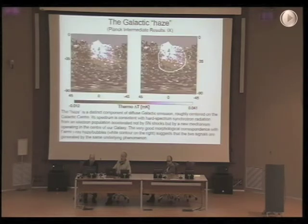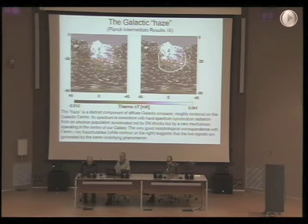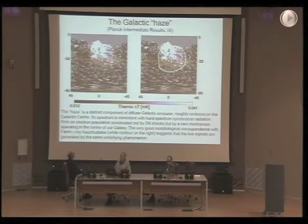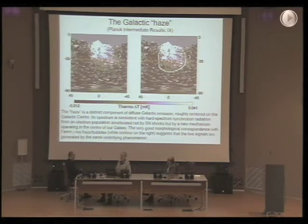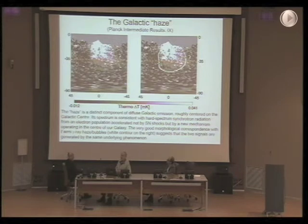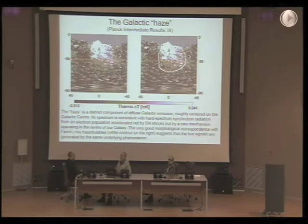I also wanted to mention something about emissions in our own galaxy detected by Planck. When we started predicting what Planck might see, we expected essentially three types of galactic emission: synchrotron, free-free, and thermal dust. It turns out we have at least six, which makes the component separation that Carlo mentioned even more tricky. In fact, the number of Planck channels that we initially thought sufficient is almost certainly not enough to separate everything.